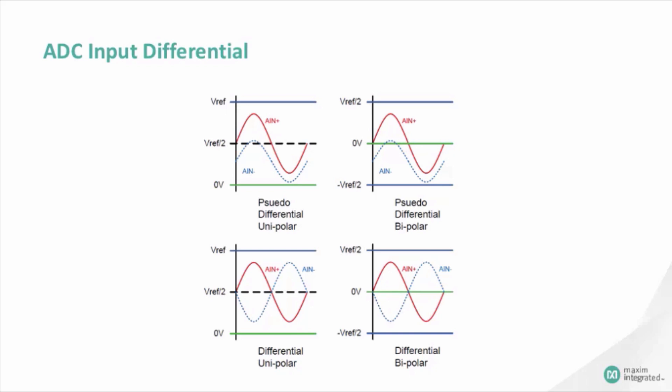Fully differential inputs do not have a limited range, like the pseudo-differential type. Both the AN-plus and AN-minus have the same range, but expect the two signals to be complementary, 180 degrees out of phase, to maximize the dynamic range. The key advantage of using differential input signals, besides increased dynamic range, is noise rejection.